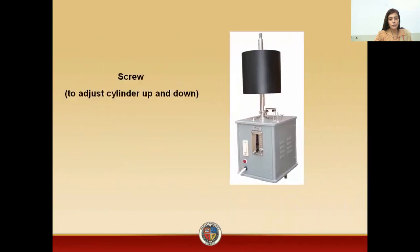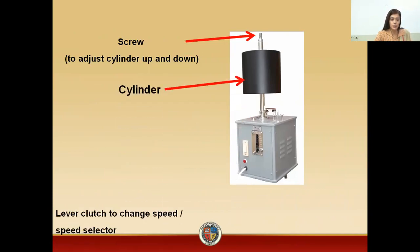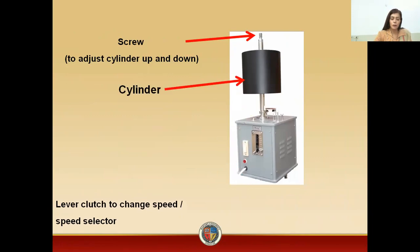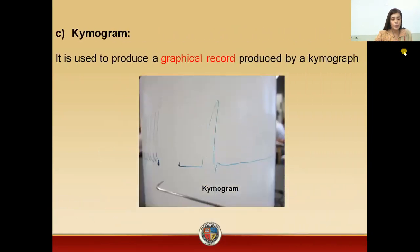This is the figure of the kymograph again. Here we have a screw to adjust the cylinder up and down, and the cylinder contains the graph — that is the kymogram. Then we have the lever clutch to change the speed, the on-off switch, and the central shaft. This is the picture of the kymogram, which is on the drum in order to record graphical recordings and record the ranges.